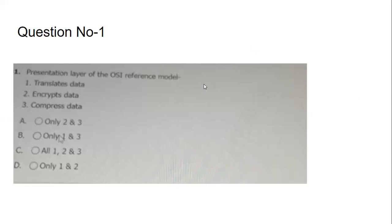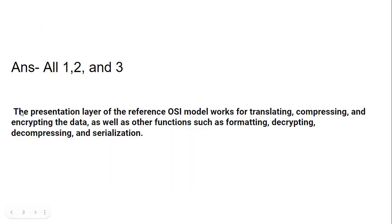The first question asked in the Accenture September exam: the Presentation Layer of the OSI reference model — does it translate data, encrypt data, or compress data? The options are: only two and three, only one and three, all one two and three, or only one and two. The answer is all one, two, and three. The Presentation Layer works on translating, encrypting, and compressing data, as well as other functions such as formatting, decrypting, decompressing, and serialization.